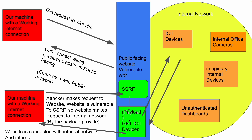In the payload there can be something like a URL parameter pointing to a different internal IP. The website then makes that internal request, gets the response, and sends it back to the attacker. So the attacker is able to access internal resources through the website, because the website is part of the internal network as well as connected to the internet. This is the definition of server-side request forgery.